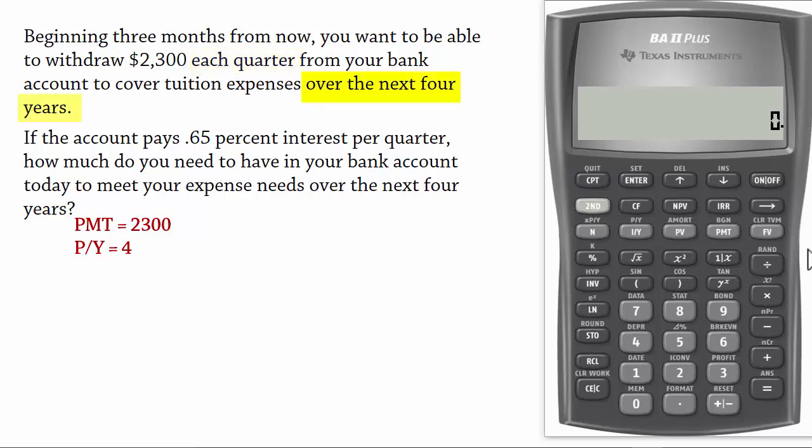Over the next 4 years implies that you will make 4 withdrawals times 4 years which equals 16. That is N number of payments equals 16.